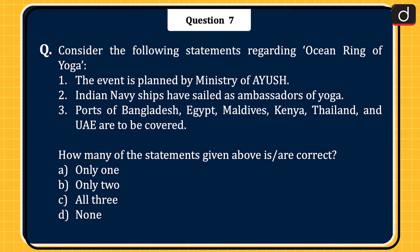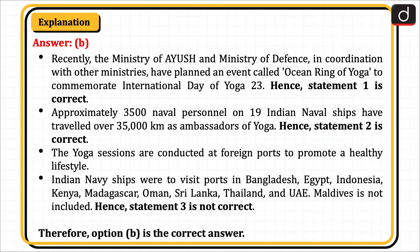Next question: Consider the following statements regarding Ocean Ring of Yoga. 1. The event is planned by the Ministry of Ayush. 2. Indian Navy ships have sailed as ambassadors of yoga. 3. Ports of Bangladesh, Egypt, Maldives, Kenya, Thailand, and UAE are to be covered. How many statements are correct? The correct answer is Option B, only two. The Ministry of Ayush and Ministry of Defence, in coordination with other ministries, planned the Ocean Ring of Yoga to commemorate International Day of Yoga 2023 — hence Statement 1 is correct. Approximately 3,500 naval personnel on 19 Indian naval ships have travelled over 35,000 km as ambassadors of yoga — hence Statement 2 is correct. Indian Navy ships were to visit ports in Bangladesh, Egypt, Indonesia, Kenya, Madagascar, Oman, Sri Lanka, Thailand, and UAE — Maldives is not included — hence Statement 3 is not correct. Therefore, Option B is the correct answer.